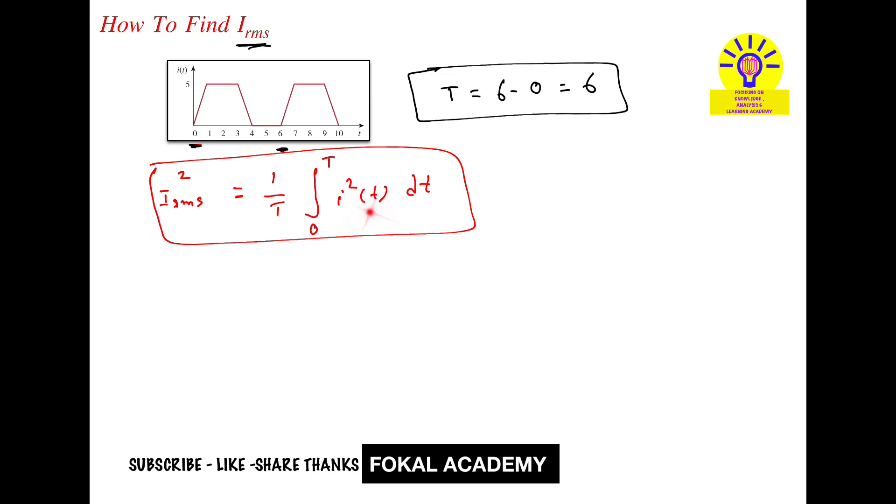Because here i of t is from 0 to 6, whatever the equation, whatever the data will be, it is called as i of t. This data from 0 to 6, this waveform data, we are going to convert into equation. This is the standard equation for this waveform. It is a repeated waveform and continuous waveform.